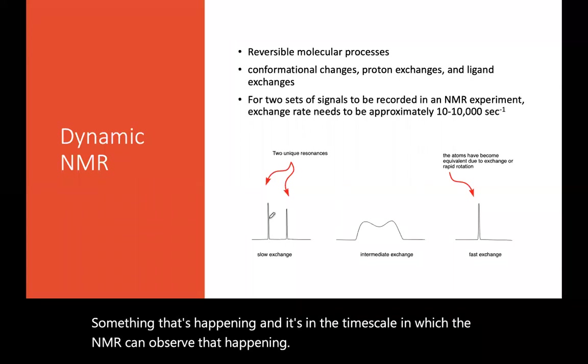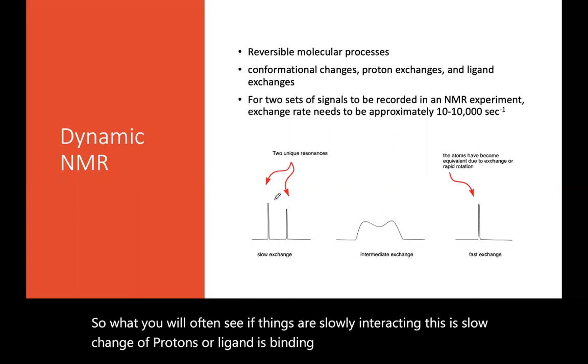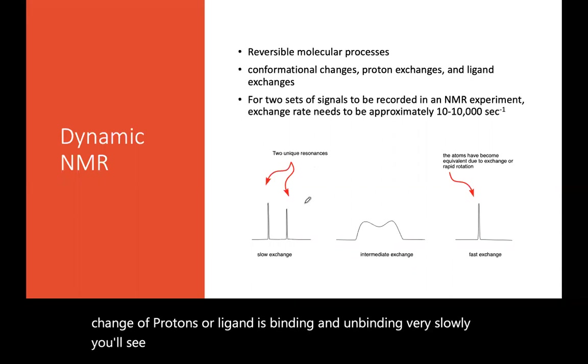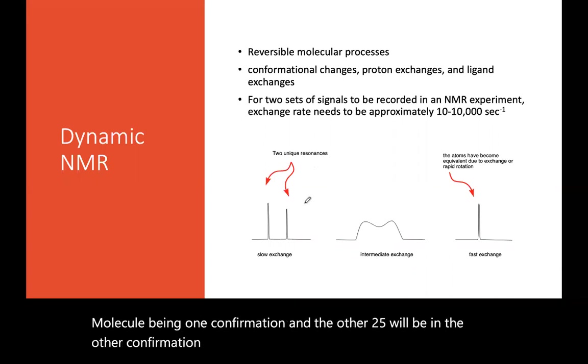So what you will often see if things are slowly interacting, it's a slow change of protons, or a ligand is binding and unbinding very slowly, you'll see two different peaks because you'll have maybe 75 percent of your molecule be in one conformation, and the other 25 percent will be in the other conformation the whole time that you are taking that spectrum.